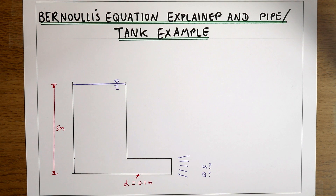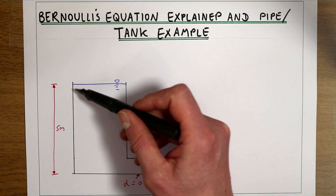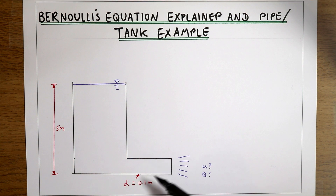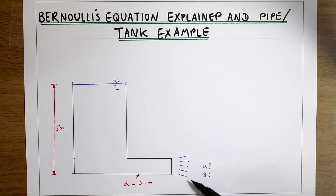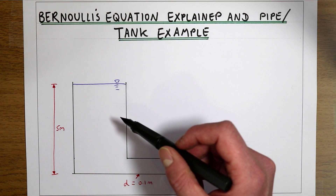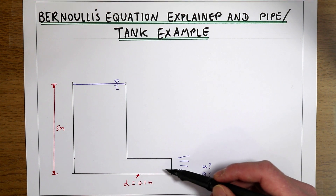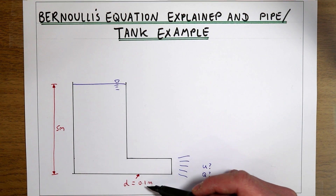In this video we're going to be looking at Bernoulli's equation in the context of an example. That example is a tank with a water level of five meters, with a pipe coming out the base of that tank with water flowing out. We're going to derive Bernoulli's equation for this example and use it to work out the velocity and flow rate coming out of this pipe, which has a diameter of 0.1 meters.